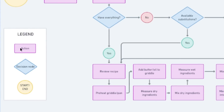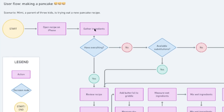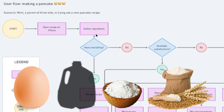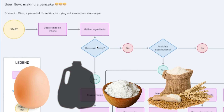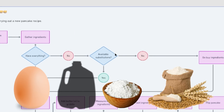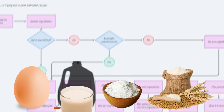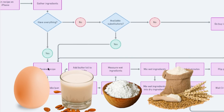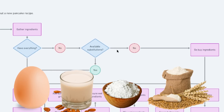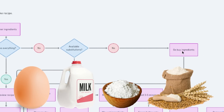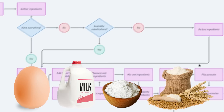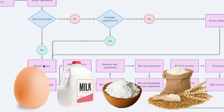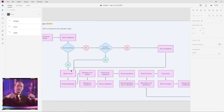If you see here in our legend, there are particular start and end points, there are actions, and then there are decisions. We've opened up our iPhone to look for recipes, we've gone ahead and gathered our ingredients. Now, the first decision is: do we have everything? If the answer is no, are there any available substitutes? If there are, we go back to the yes flow. If there are no substitutes available, we simply go to buy ingredients. And once we finally have all the ingredients, we simply go back to reviewing the recipe. We've left the link in the description for you to see this example for yourself.